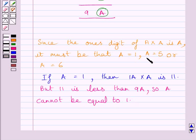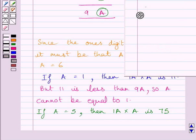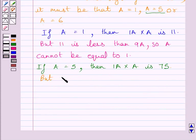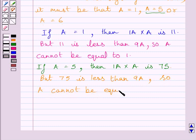If A equals 5, then the product 1A multiplied by A is 75. If we substitute 5 for A, we get 15 multiplied by 5 as the product, and 15 multiplied by 5 equals 75. But 75 is less than 9A, so A cannot be equal to 5.